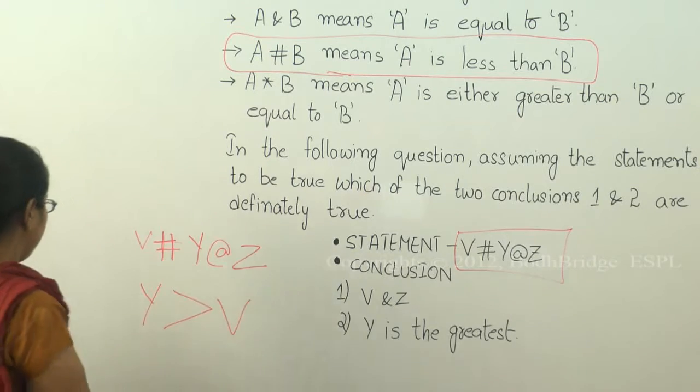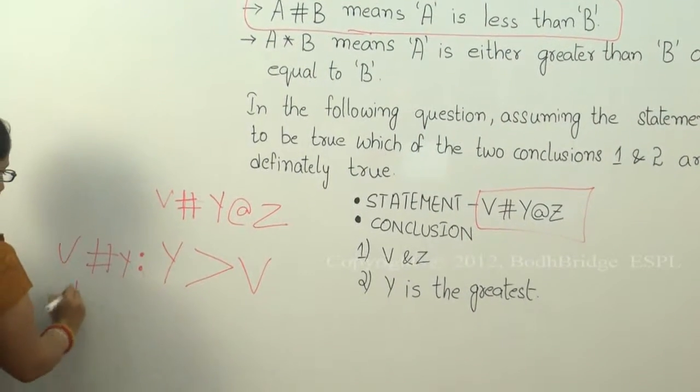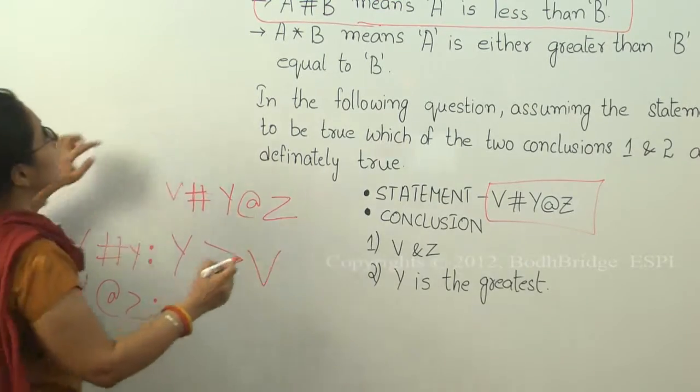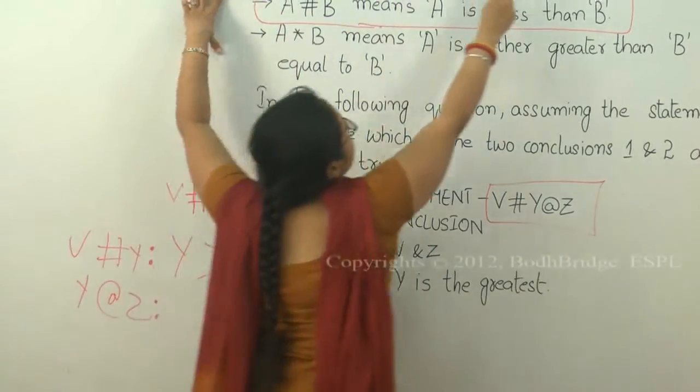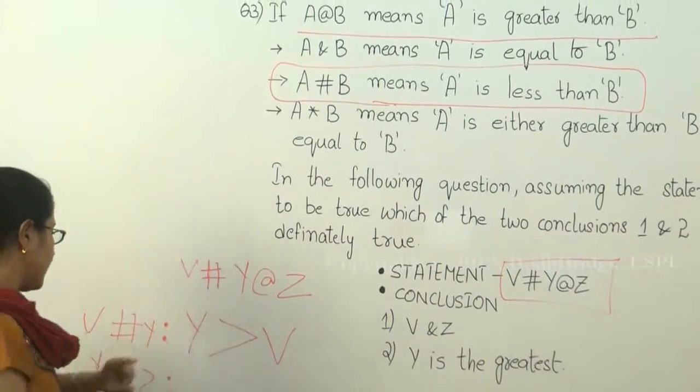Now this is for V hash Y. Now we will see for Y at the rate Z. What does this mean? 'A at the rate B' means A is greater than B. So Y is greater than Z.